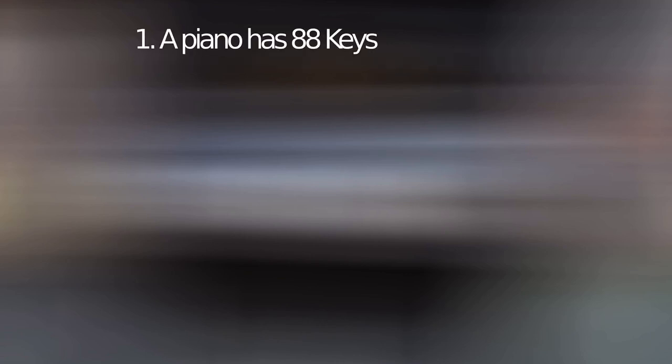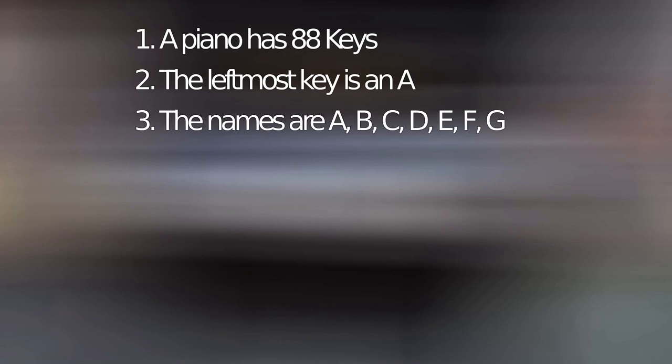A piano has 88 keys. The first key on the far left is A. The names of the notes on the white keys are the first 7 letters of the alphabet: A, B, C, D, E, F, G.